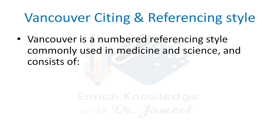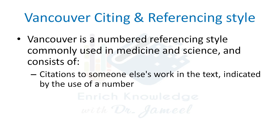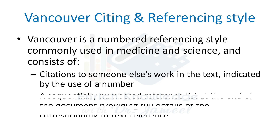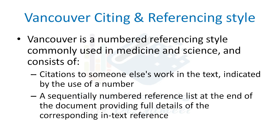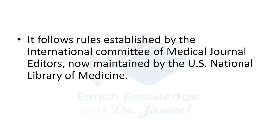The Vancouver Citing and Referencing Style. There are different methods available for citing and referencing in scientific papers. Among them, Vancouver is a numbered referencing style commonly used in medicine and science. It consists of citation to someone else's work in the text indicated by a number, and a sequentially numbered reference list at the end of the document providing full details of the corresponding in-text reference. It follows rules established by the International Committee of Medical Journal Editors, and is now maintained by the US National Library of Medicine, that is NLM.